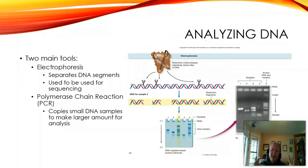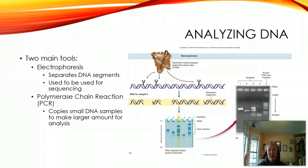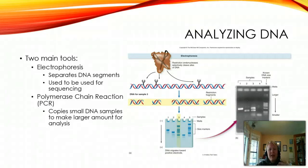Another application for analyzing DNA is called polymerase chain reaction, or PCR. When we have DNA and only a very little bit of it, we have to make huge amounts of copies in order to be able to analyze it — we can't analyze microscopic amounts. Polymerase chain reaction allows us to make those copies that we can then use with electrophoresis or other applications.